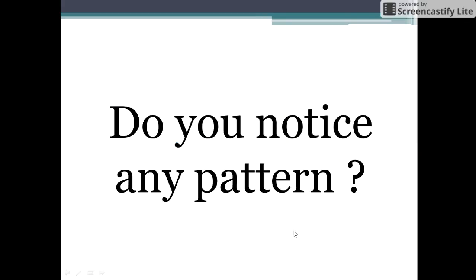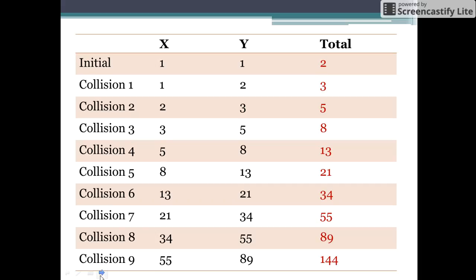Friends, do you notice any pattern in the formation of these stars? Let us see the pattern through the table here. Initially we had one x type of star and one y type of star, so in total we had two stars. When these stars collided, the collision resulted in the formation of two y type of stars and one x type of star, giving a total of three stars. In collision number two, two y type of stars and one x type of star collide to form three new y type of stars, and the two y type of stars were converted into two x type of stars, so the total stars are 2 plus 3, that is 5.